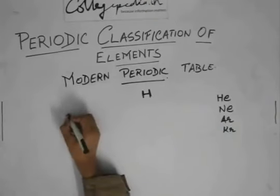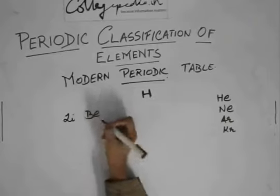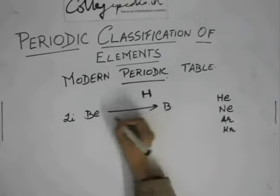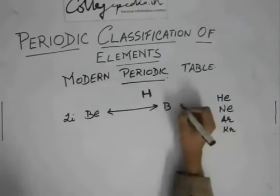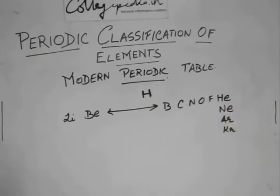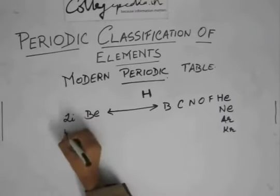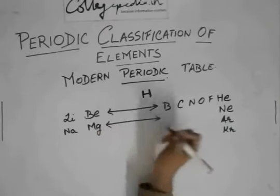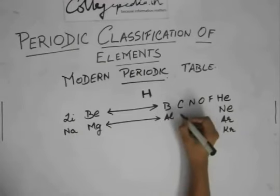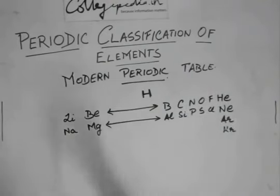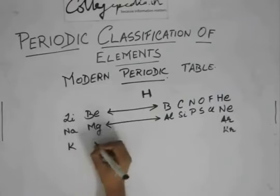We have lithium, beryllium, and boron is over here after a long gap. Then we have boron, then carbon, nitrogen, oxygen, fluorine, helium. After lithium, we have sodium. After beryllium, we have magnesium. Then we have another long gap. I'll tell you what this long gap is for. Then we have aluminum, silicon, phosphorus, sulfur, chlorine, and then neon. Then we have potassium, calcium.